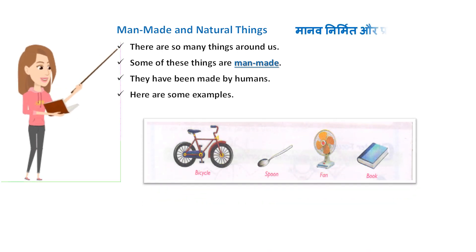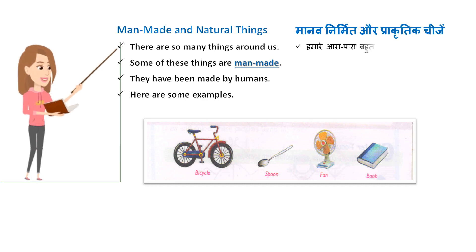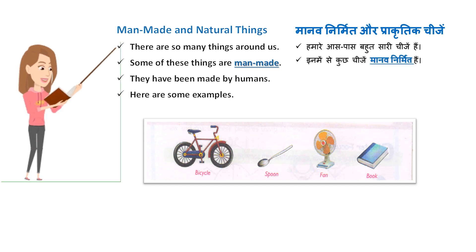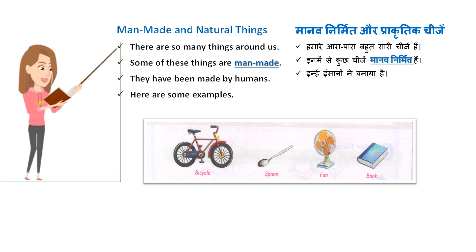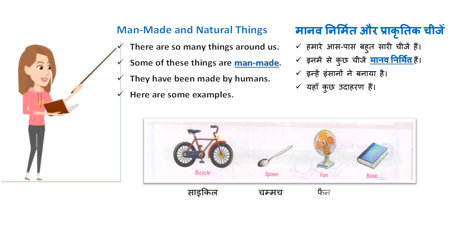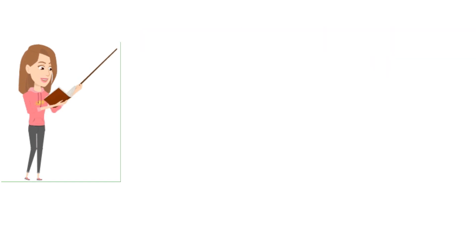Maanav nirmit aur prakritik cheezay. Hamare aaspaas bahut saari cheezay hain. In mein se kuchh cheezay maanav nirmit hain — inhe insaanon ne banaaya hai. Yahan kuchh udaaharan hain: bicycle, spoon, fan, book. Saikil, chammach, fan, book.